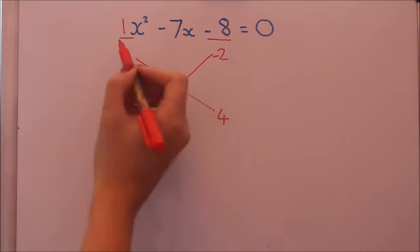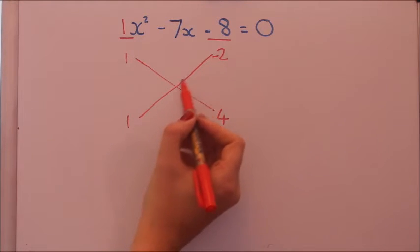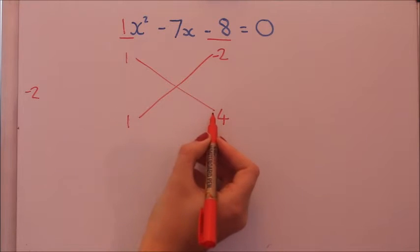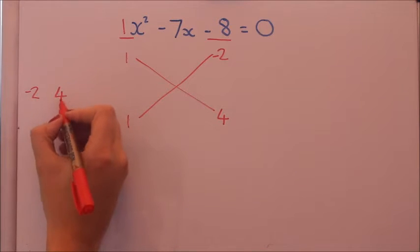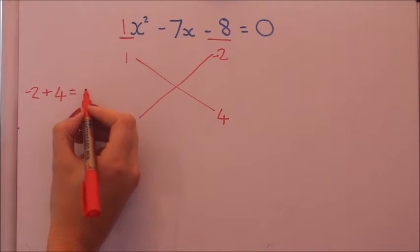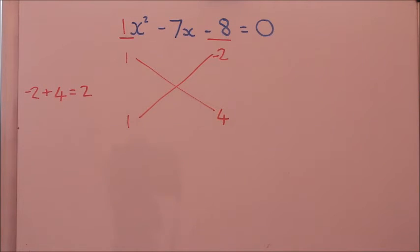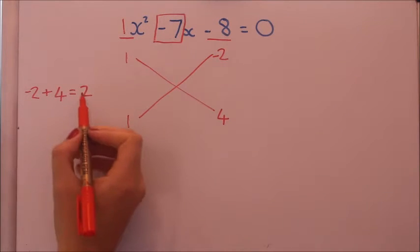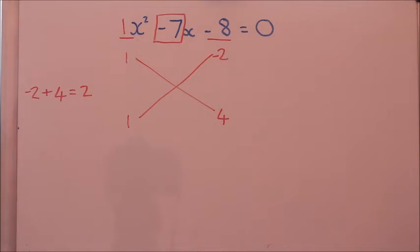Now the way to test it out is to use the cross. We're going to multiply through the cross, so minus two times one is minus two, and one times four is four. Add those numbers together and you'll get two. Now we want to get the number in the middle, which is minus seven, so not only is the sign wrong, but the number's wrong as well.